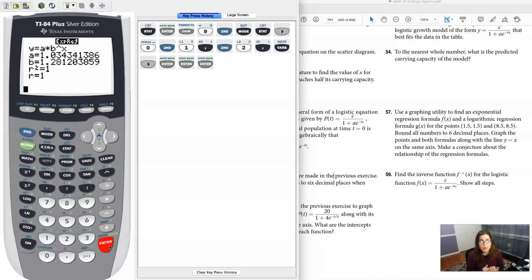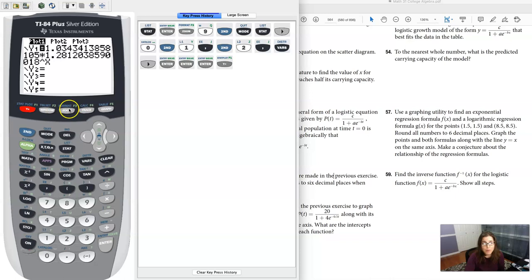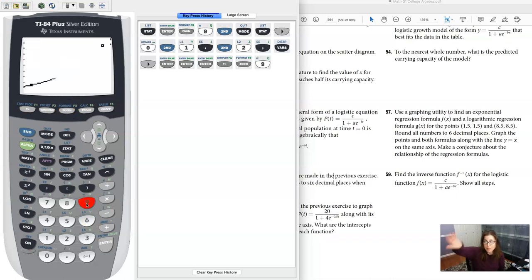All right, my a value is 1.034. My base of my power is 1.281. You see that equation. I dropped it into Y1. So far, you see the exponential regression model.